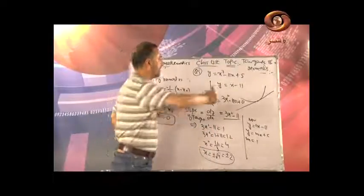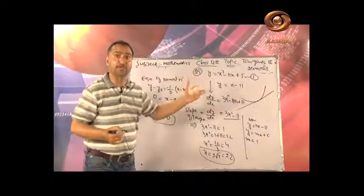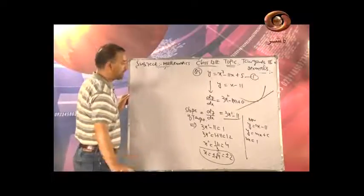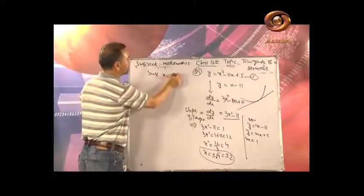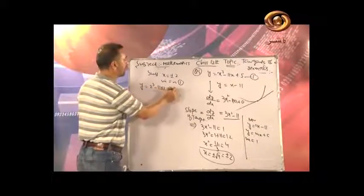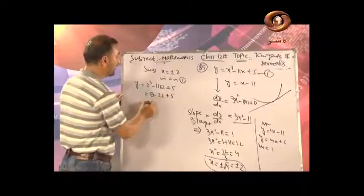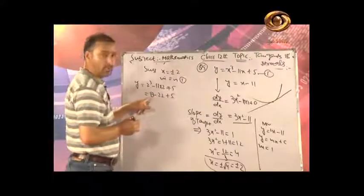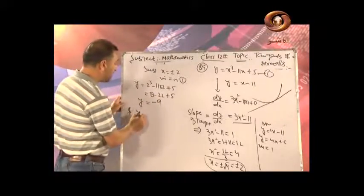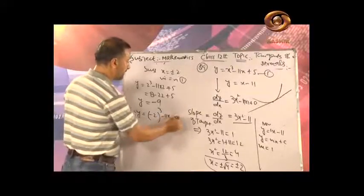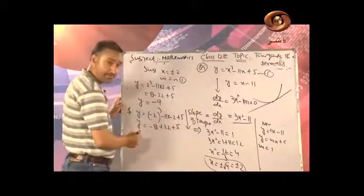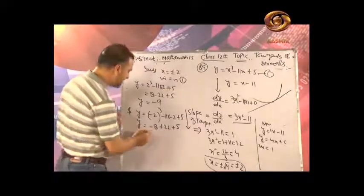Substituting x = 2 into y = x³ - 11x + 5: y = 8 - 22 + 5 = -9. Substituting x = -2: y = -8 + 22 + 5 = 19. So we get two candidate points: (2, -9) and (-2, 19).